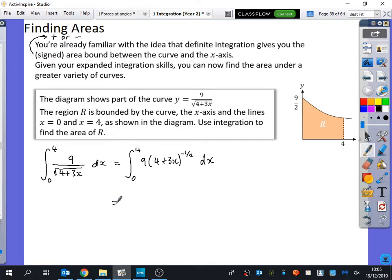We could put the 9 outside the front. We're going to have 4 plus 3x. I would increase the power by 1, so the power would become a half. I would divide by the power - dividing by a half is timesing by 2. But I also need to divide by the 3, which is the coefficient of x. I've got the 9 that was there as well. So you get this expression between 0 and 4.